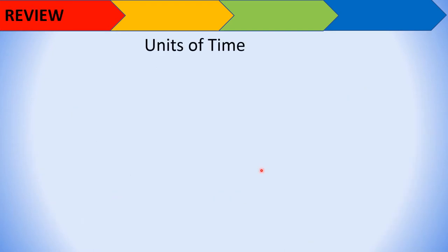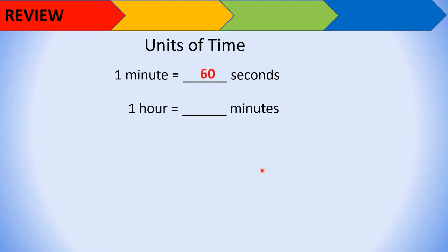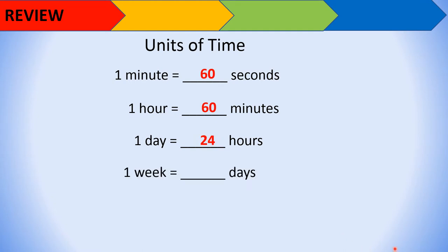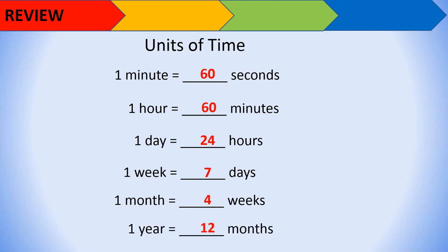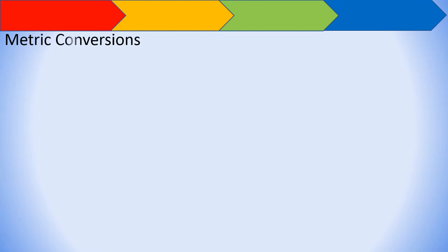For our review, let's check this conversion. Units of time: 1 minute is equal to 60 seconds, 1 hour is equal to 60 minutes, 1 day is equal to 24 hours, 1 week is equal to 7 days, and 1 month is equal to 4 weeks on average.